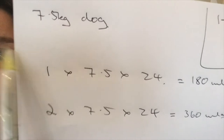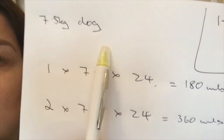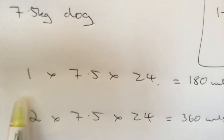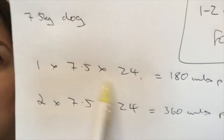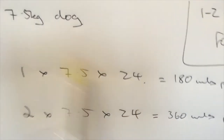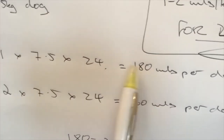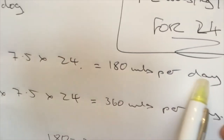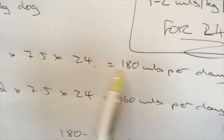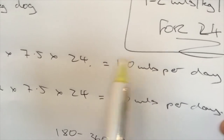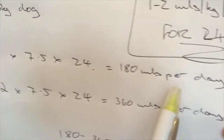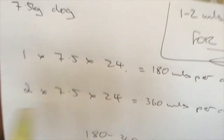For example: 7.5 kilo dog. 1 times 7.5 kilos times 24. I've got my three steps in. It's 180 mils per day. I've actually written 'per day'. Make it really obvious.